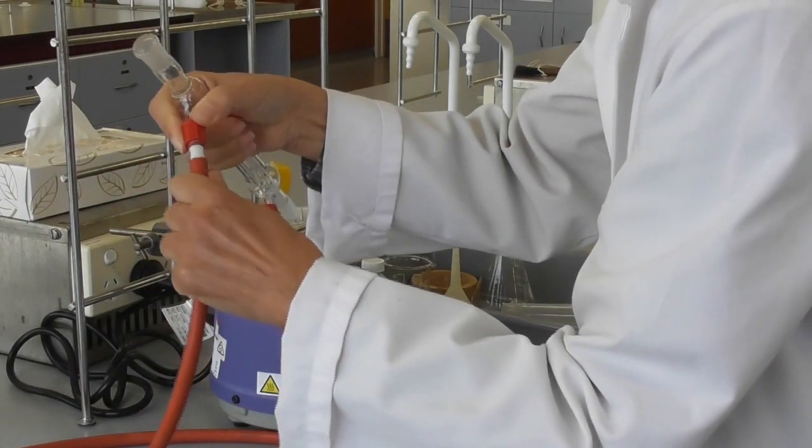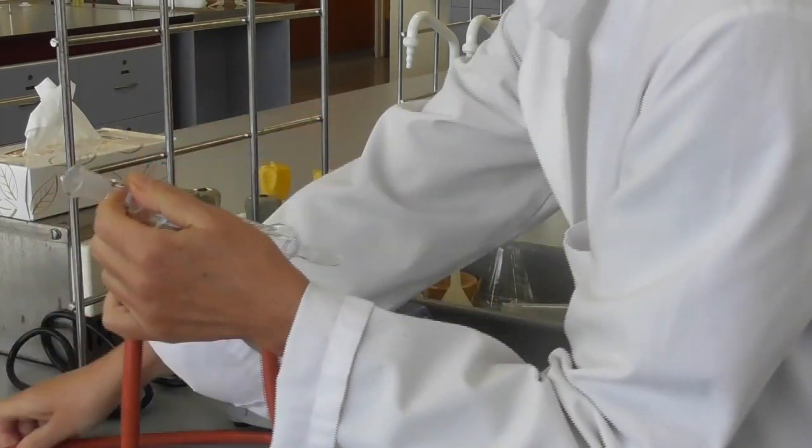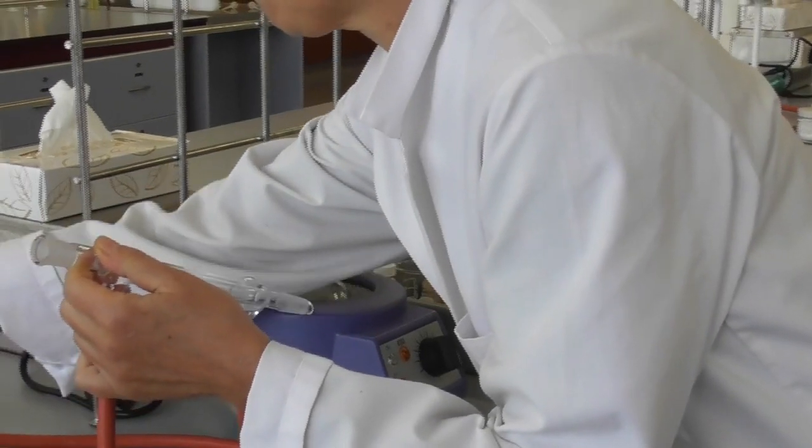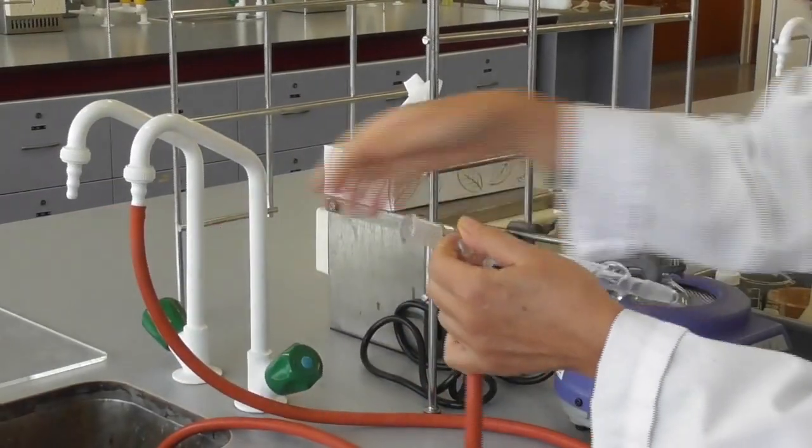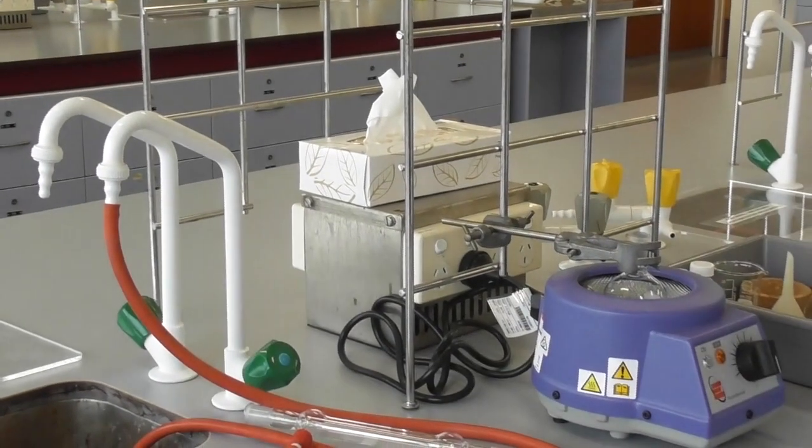Next, we take the condenser and attach the water hoses. The incoming hose gets attached to the bottom of the condenser; the top one is the outlet.